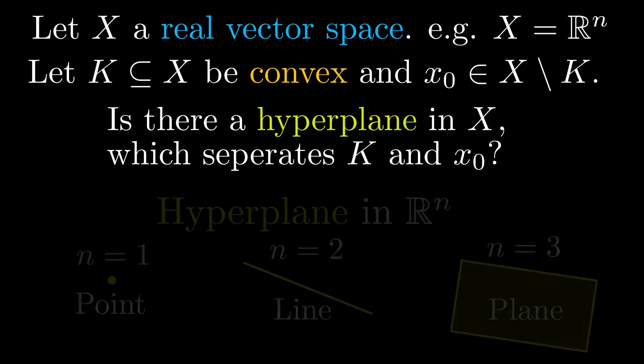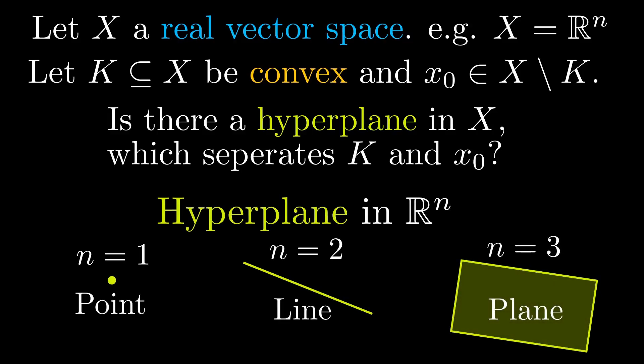A hyperplane is a space with dimension one less than the surrounding space. So in dimension one, a zero-dimensional point is a hyperplane; in two dimensions, a line; and in three dimensions, a plane.